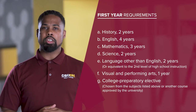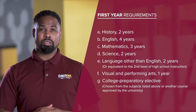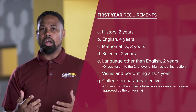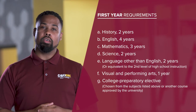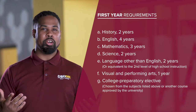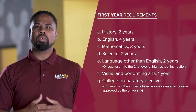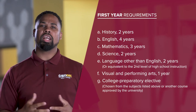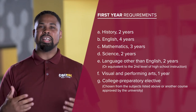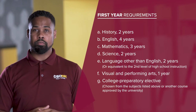Next is two years of a language other than English — we would ideally want this to be in the same language. Then a year of visual performing arts, typically dance, theater, or music. And the last one is a college elective course, which is just an additional approved A through G course.